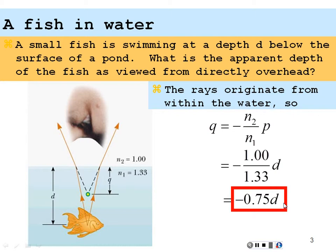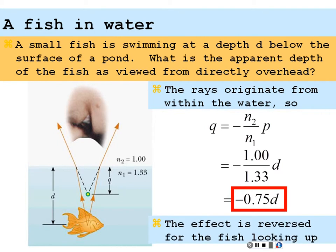So if you're looking at this fish in the water, the fish is going to appear like it's 25% closer to the surface than it actually is. If you try to reach down to grab the fish, you're very likely to miss it. It's going to be reversed for the fish looking up — to the fish, you're going to appear about 33% further away than you actually are.